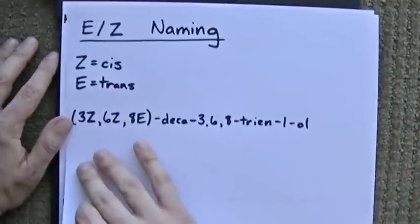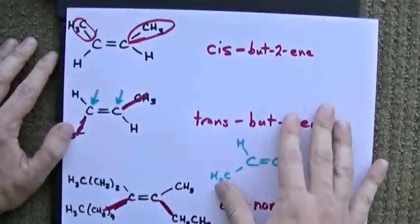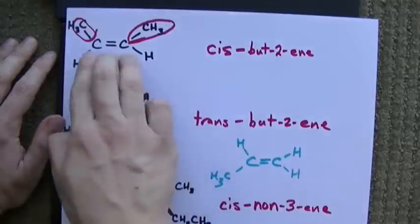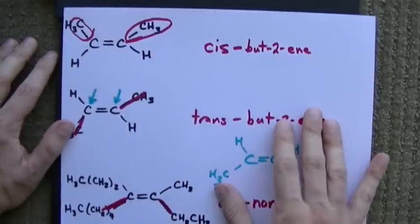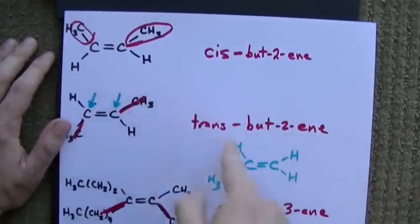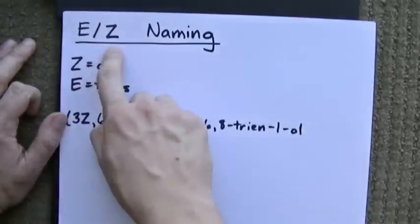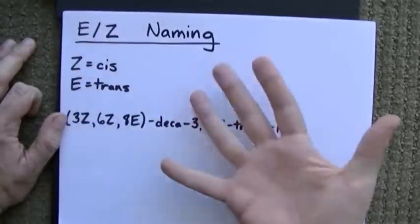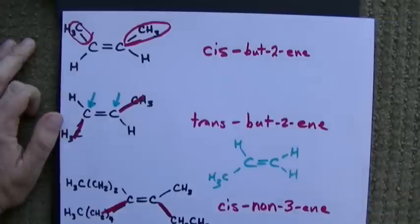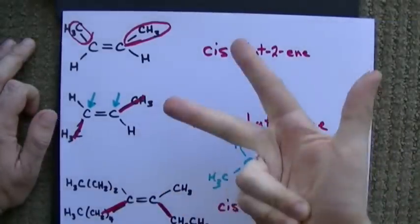The last thing I want to point out is that cis and trans really only works if you have only one double bond in the molecule. If you have more than one double bond, how are you going to tell the difference between whether this one's cis, this one's trans? The official way to do that is something called EZ naming. I'm going to make another video about that because for the most part, you're just going to be using cis and trans. Hey, best of luck!